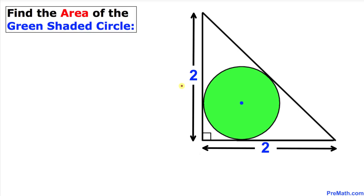Welcome to PreMath. In this video tutorial we have a right angle isosceles triangle with a circle inscribed in it. The side lengths of this triangle are two units each, and we are going to find the area of this green shaded circle.